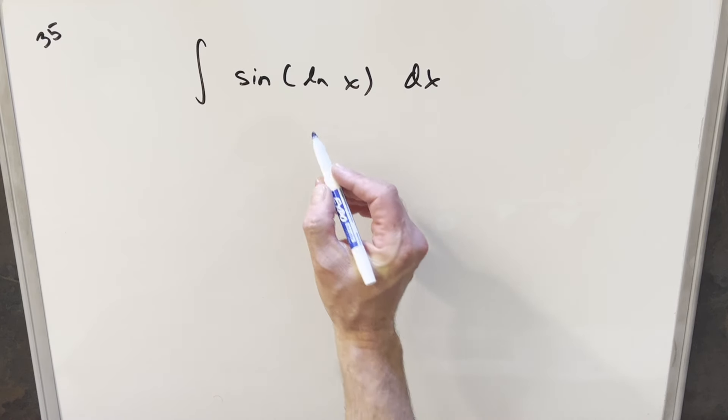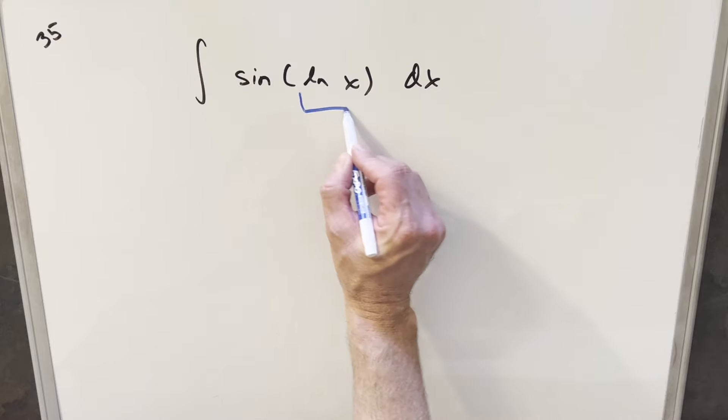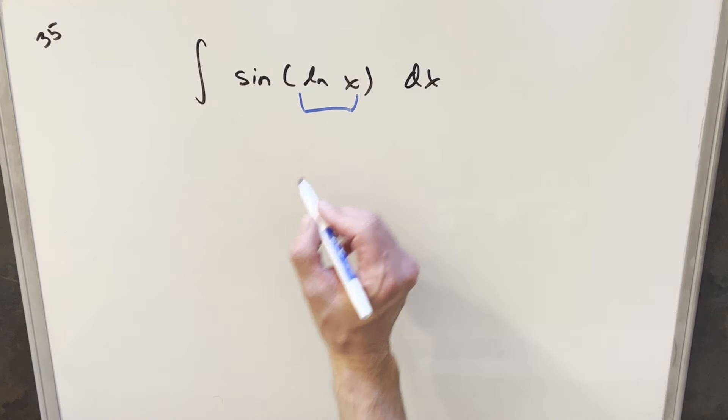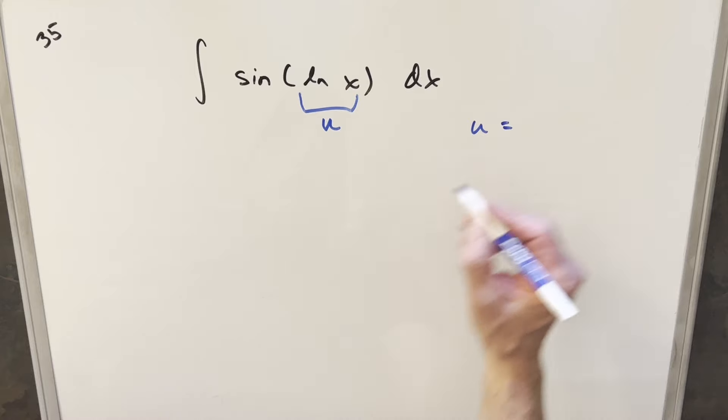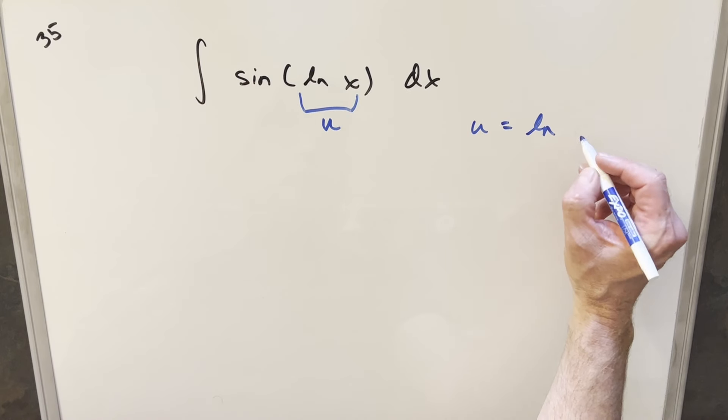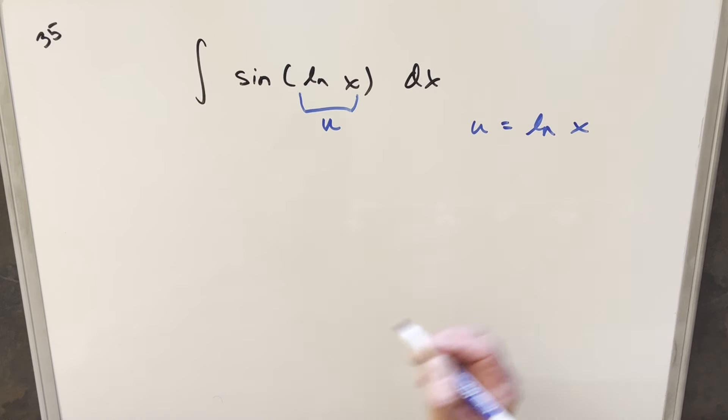To get started, I want to deal with the obvious thing. We've got a natural log inside the sine function. I don't really like that, so I'm going to do a u-substitution right away to get rid of that. I'm going to make my u equal to ln x.